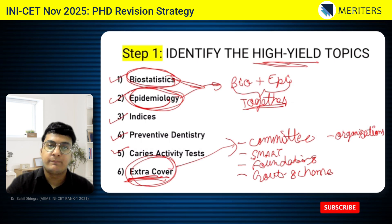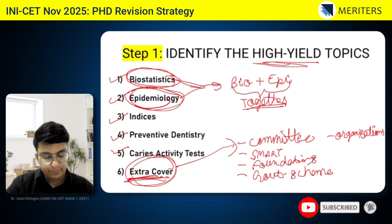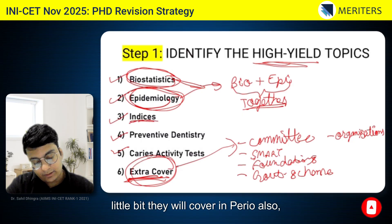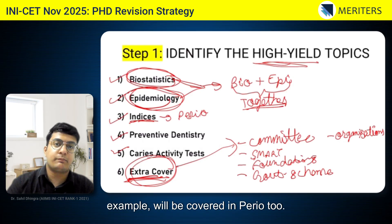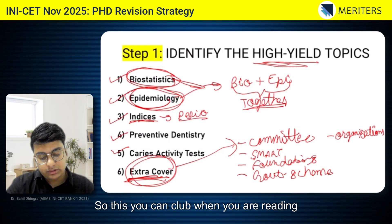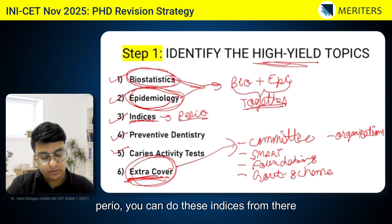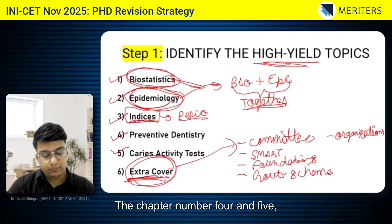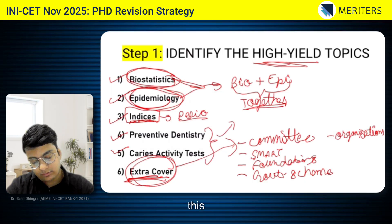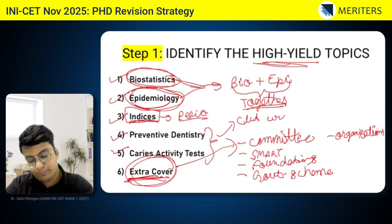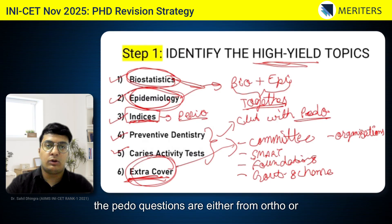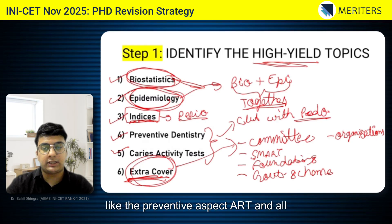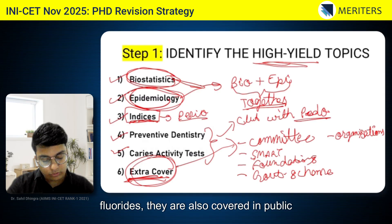Do these three topics first because they are the core PhD topics. For indices, they will also be covered in periodontology — for example, the tooth mobility index. So you can club indices when reading perio. Chapters four and five should be clubbed with pedodontics. Pedo has lower weightage because many pedo questions overlap with ortho, endo, or public health topics like fluorides and ART.